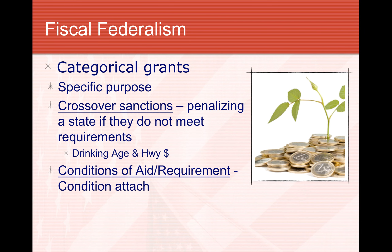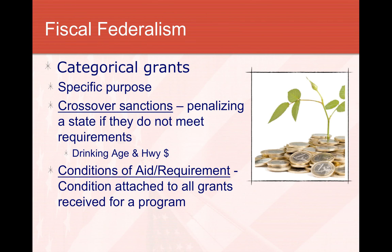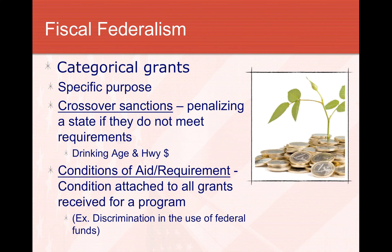There are also conditions of aid — requirements the state must meet to receive any categorical grant. For example, state organizations and the state itself must follow discrimination laws. A school district must avoid discriminating in hiring teachers and staff members. This allows them to keep receiving the categorical grant focused on education. Schools get funds from the federal government for education, but must meet these requirements or lose that funding.